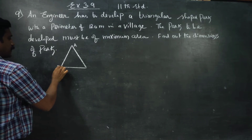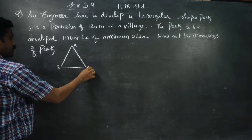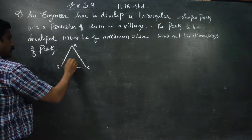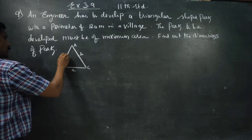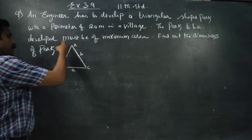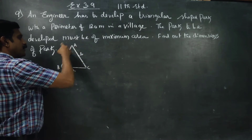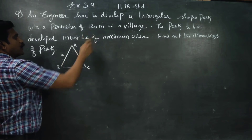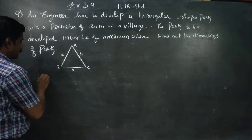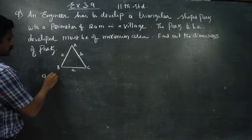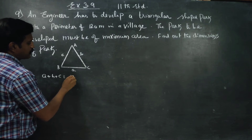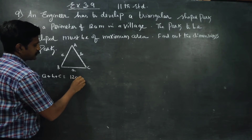Let the triangle be ABC. The opposite side lengths are small letter a, small letter b, small letter c. The perimeter is 120 meters, that is, a plus b plus c is equal to 120 meters.